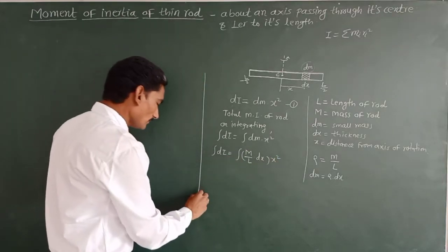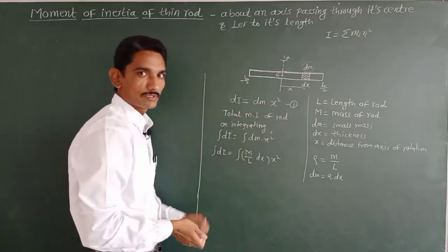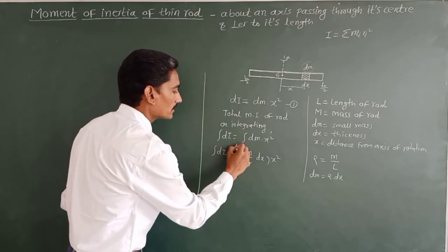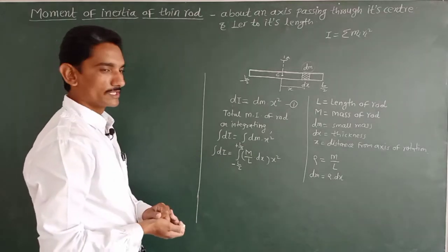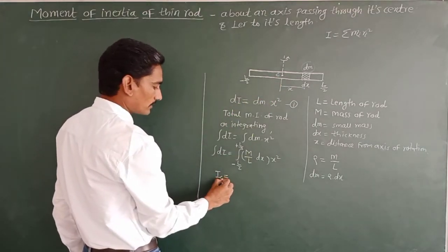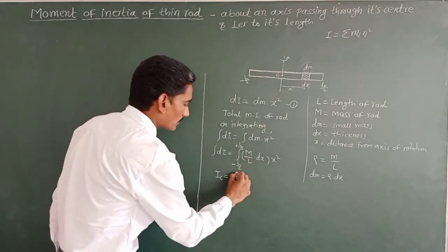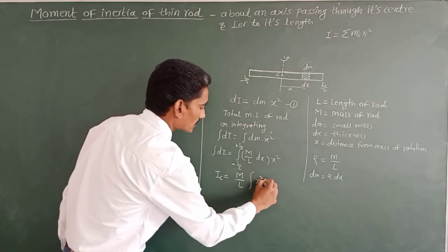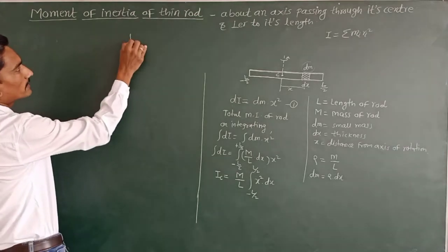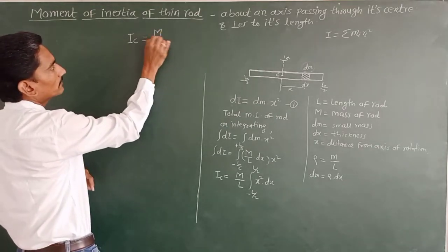On integrating using the limits, we integrate from minus L/2 to plus L/2, meaning we consider the total rod. So the integration of dI gives us IC, the total moment of inertia of the rod about an axis passing through its center of mass or its geometrical center. IC equals (M/L) times the integration of x squared dx, with limits from minus L/2 to plus L/2.